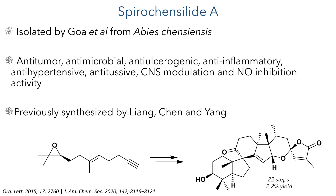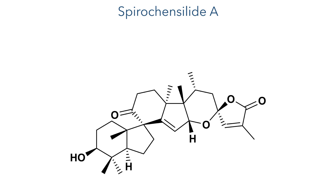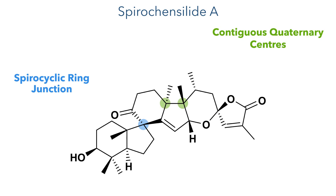Spirochinenside A has previously been synthesized in 22 steps by Lang, Chen, and Yang. Their synthesis is quite elegant and creative, and I've covered it previously on this channel. The structure of spirochinenside A presents some interesting challenges for the synthetic chemist: it contains a spirocyclic ring junction, two contiguous quaternary centers, and also a spiroketal, all of which are chiral and must be constructed stereoselectively.